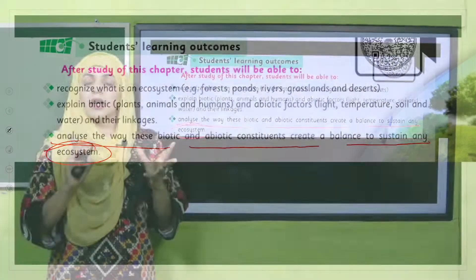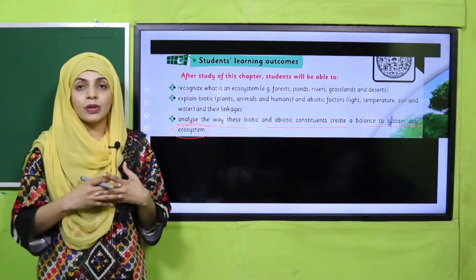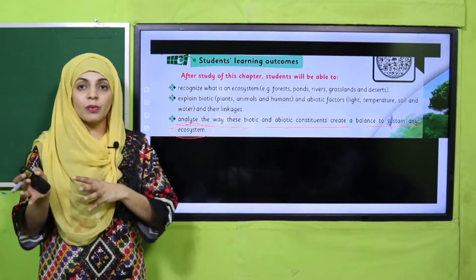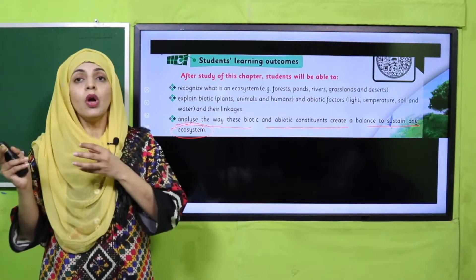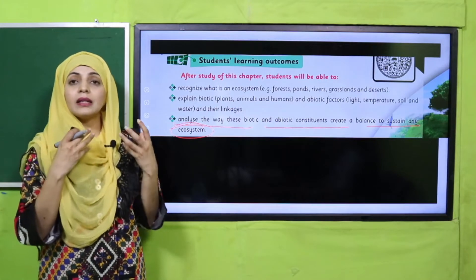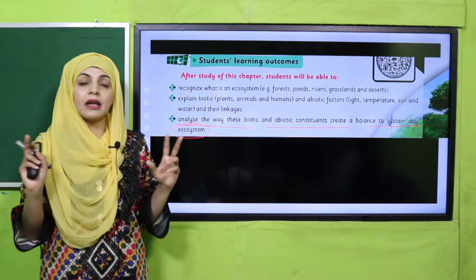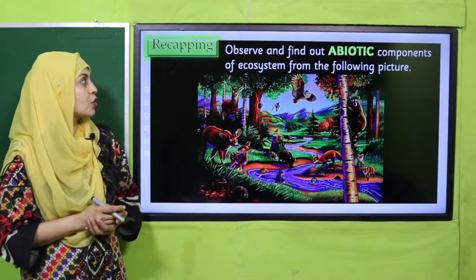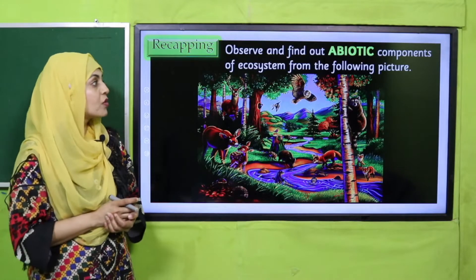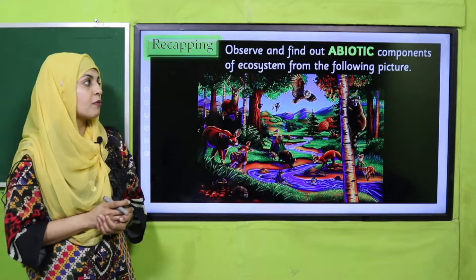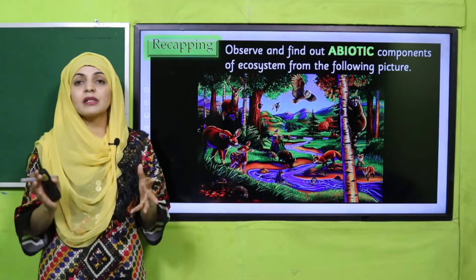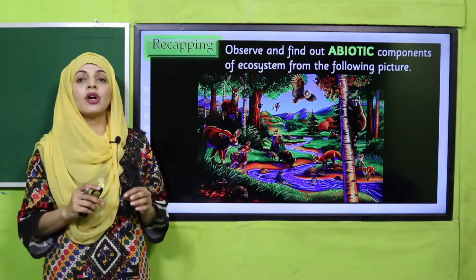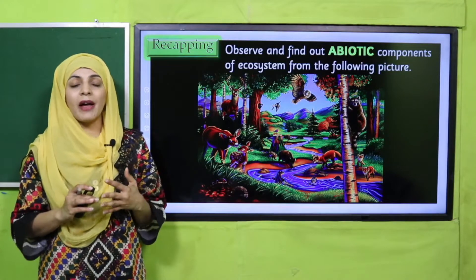When the living things and non-living things of an ecosystem interact with each other, how is the balance maintained? Plants are consumed by plant-eating animals, and plant-eating animals are eaten by meat-eating animals, and they also interact with their surroundings and environment. We will study about that. Let's recap what we did in the previous lecture: observe and find out abiotic components of an ecosystem from the following picture. Quickly pause the video, have a look at the picture, and select all the abiotic factors.